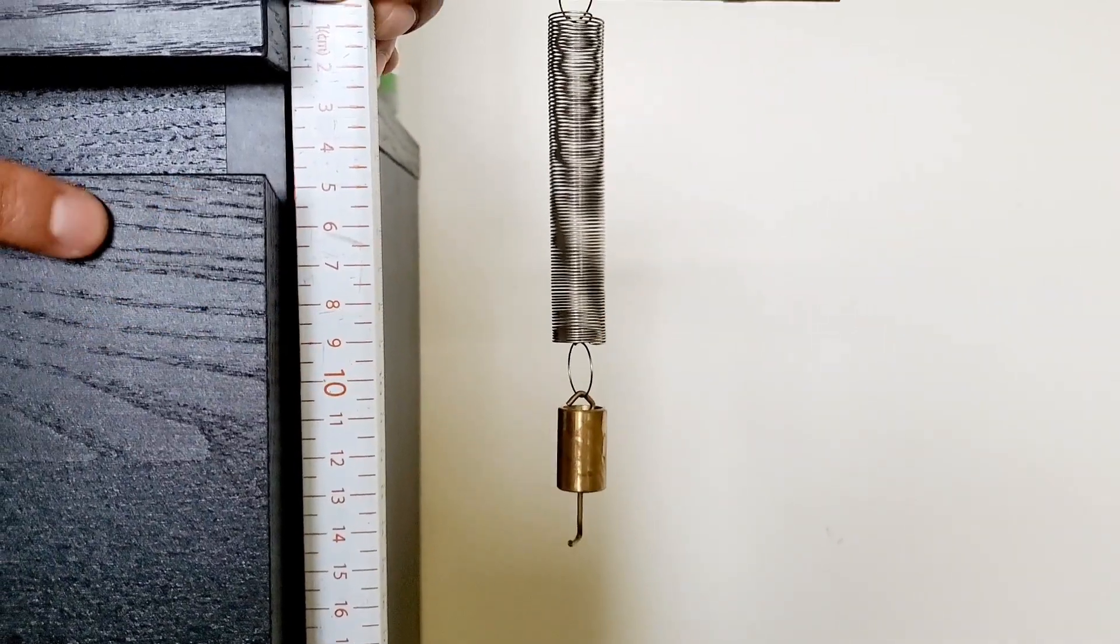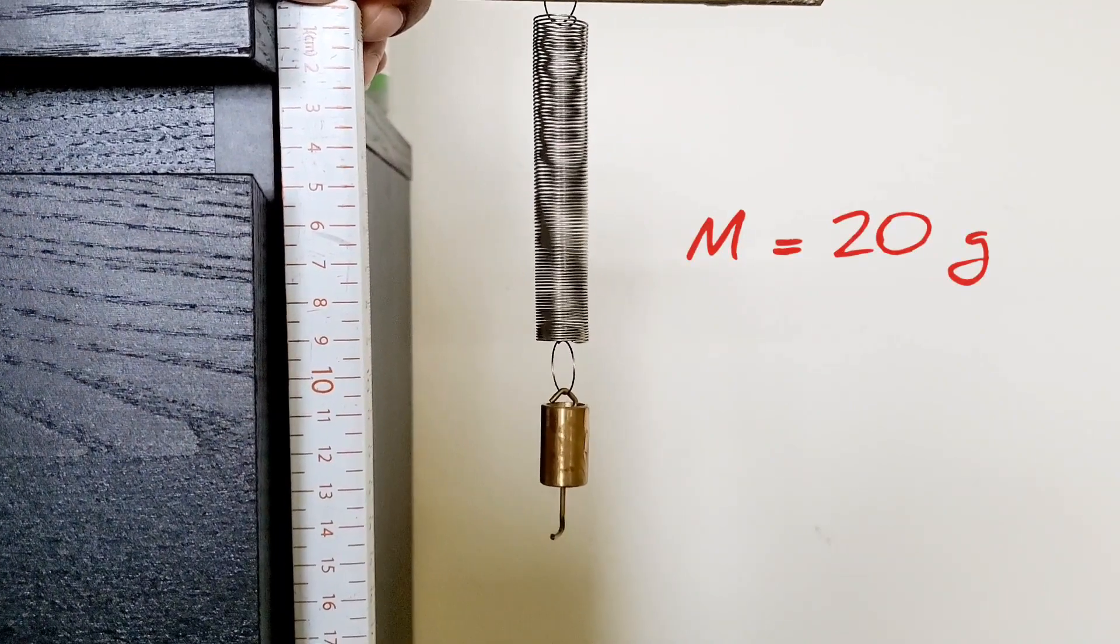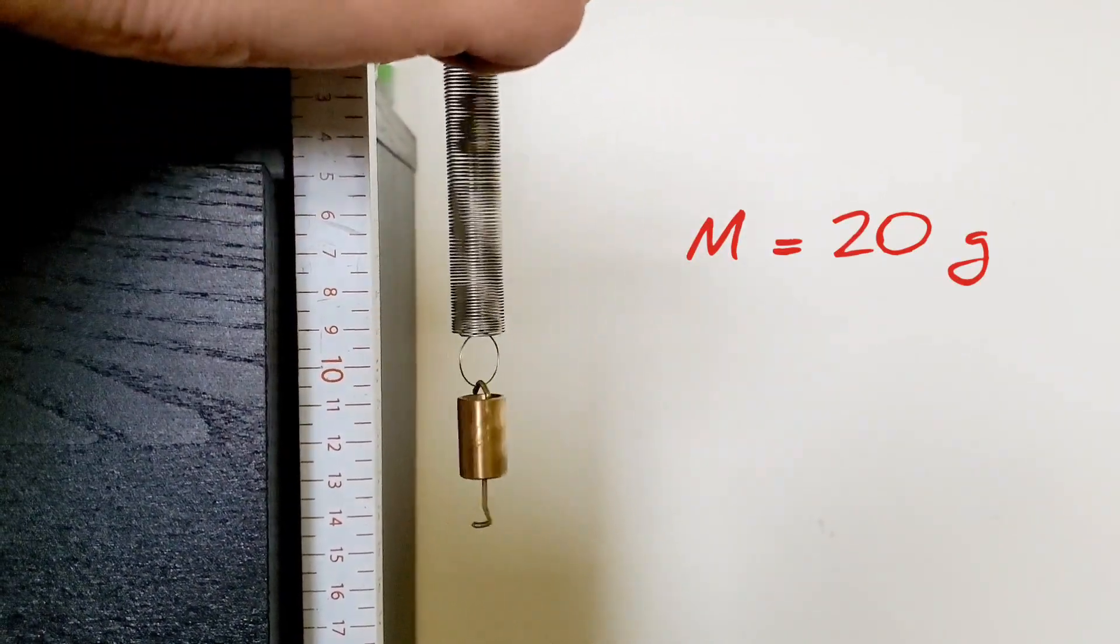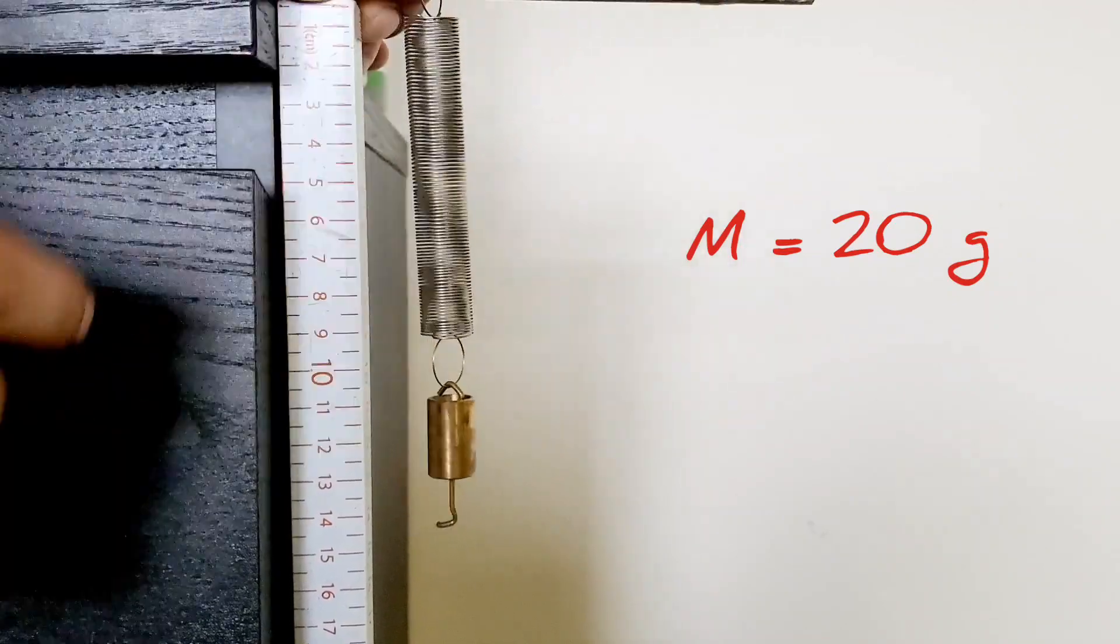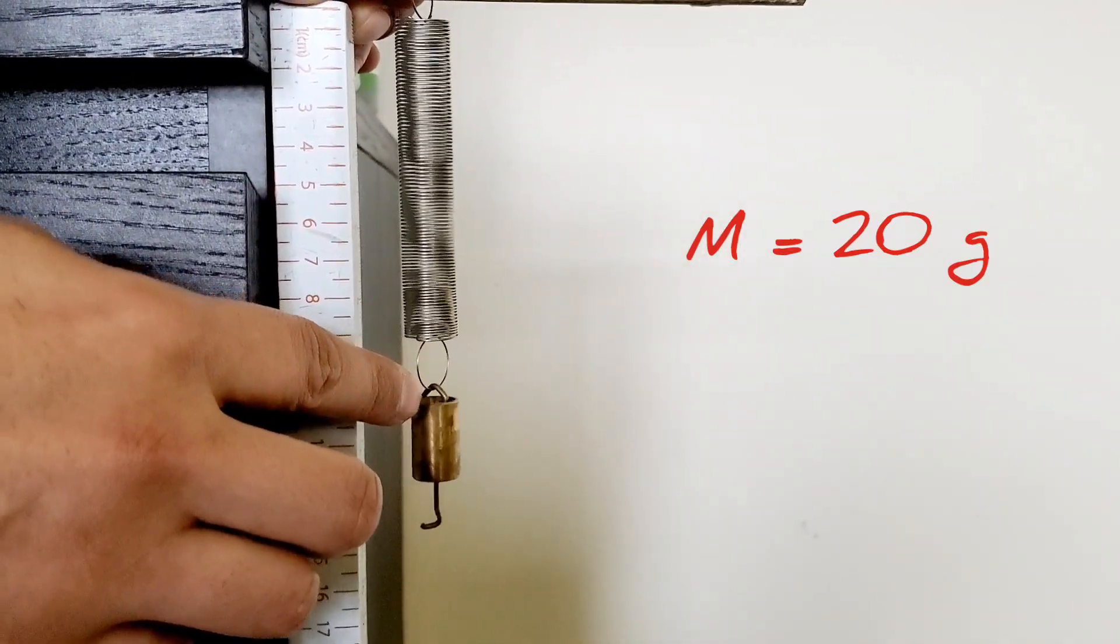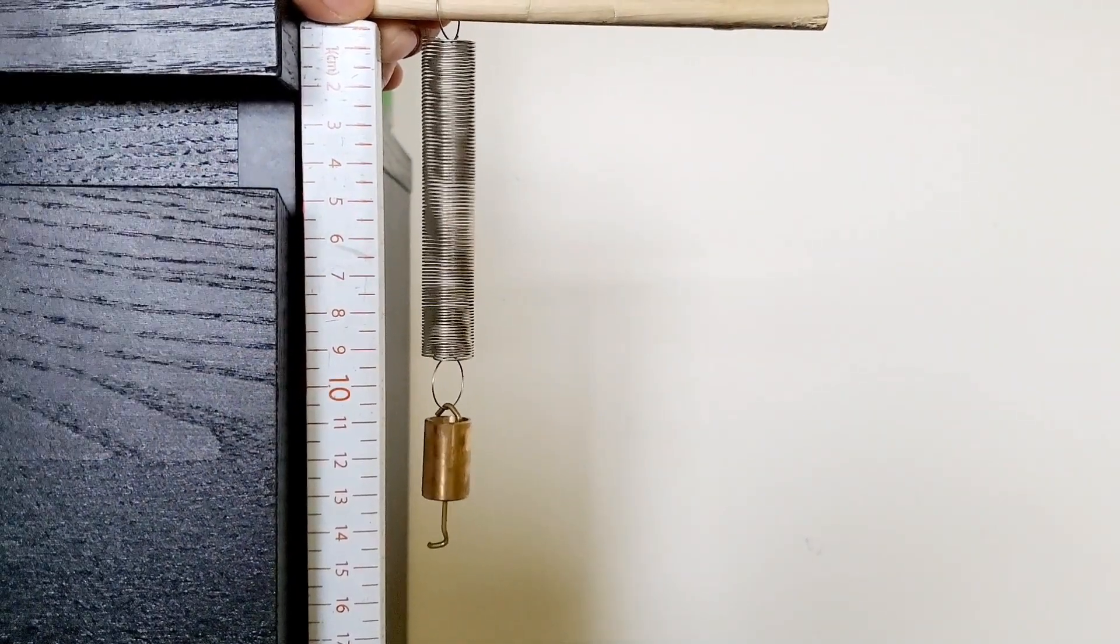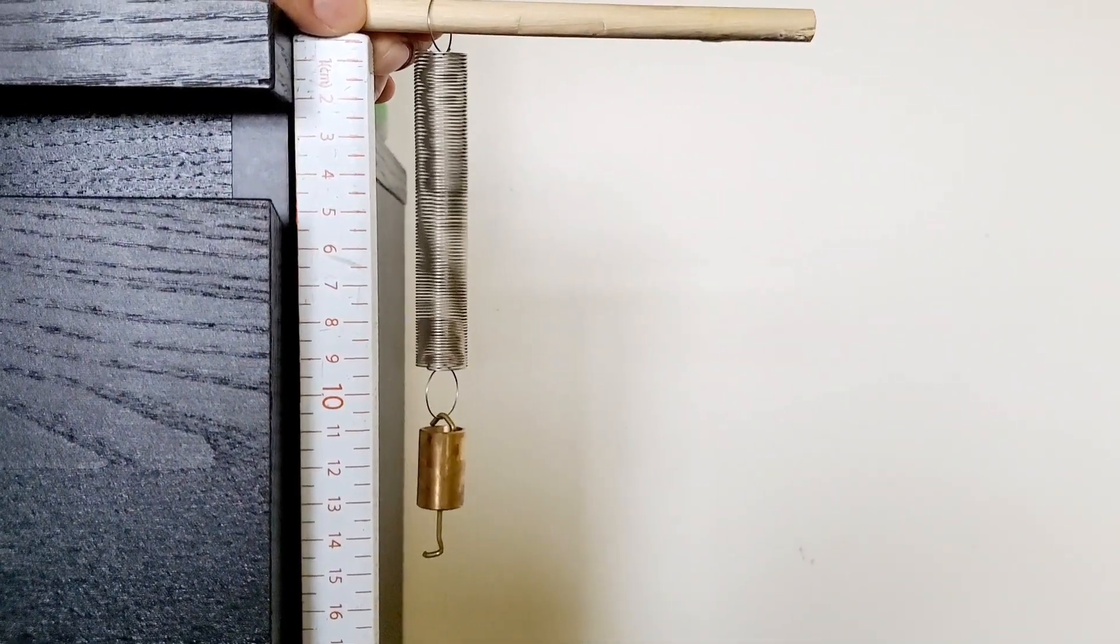All right, and so now the last mass is the 20-gram mass, and here's the new stretch position. I'll try to bring it closer so you can see what it's going to look like. And from the center of the hoop right here, see where that new distance is, and compare it to the initial distance when it was unstretched.